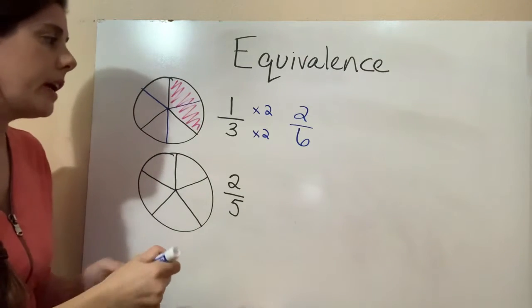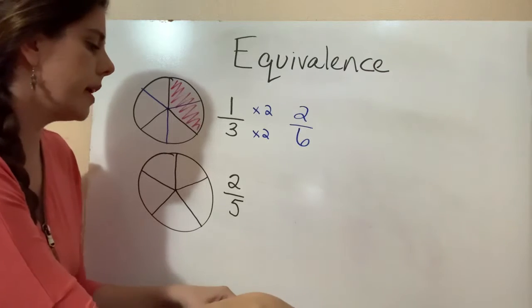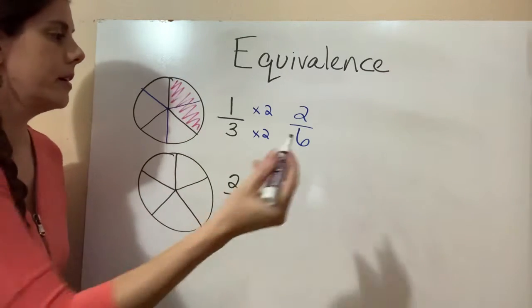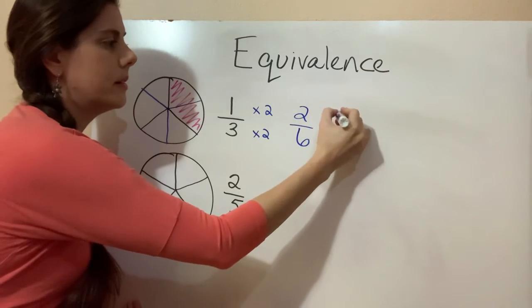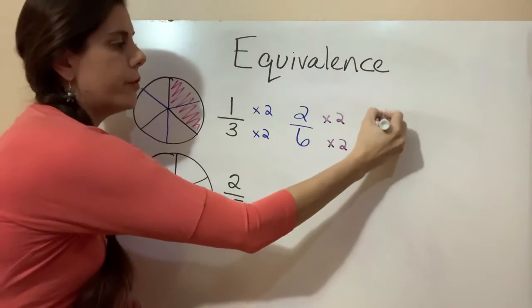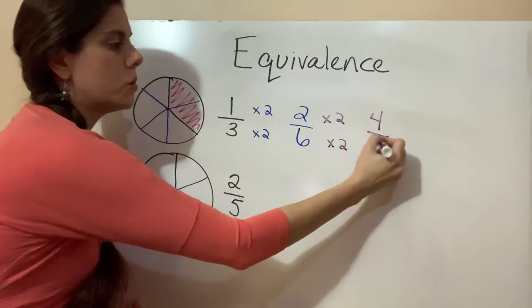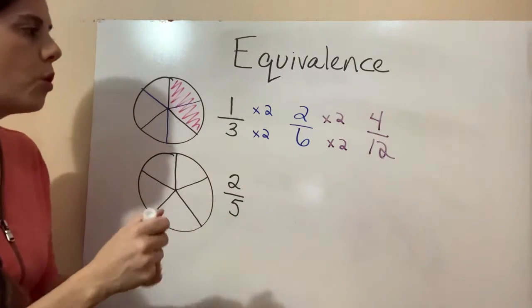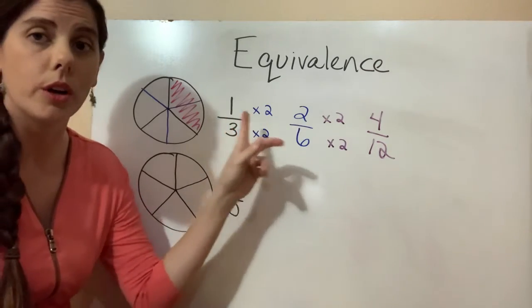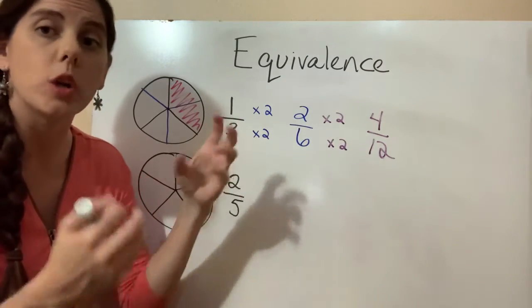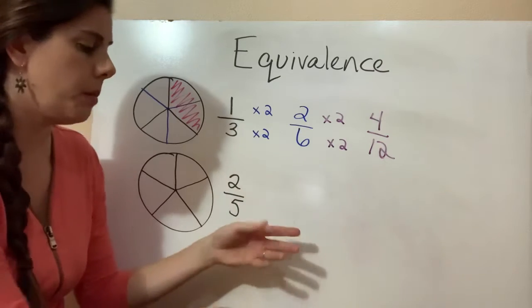We can take this further if we wanted to and create another set of equivalent fractions. If we wanted to multiply this by two, two times two is four. Six times two is twelve. So four twelfths is the same as two sixths, and it's the same thing as one third. All of these fractions are equivalent. They're equaling the same thing.